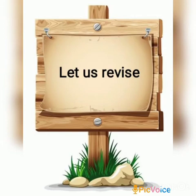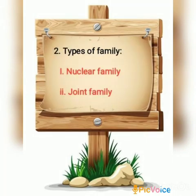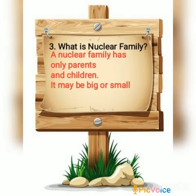Let us revise today's Chapter Number 3: My Family. First, what is a family? A family is a group of people related to each other. Second, the types of families — there are two types: Nuclear Family and Joint Family. A nuclear family has only one set of parents and children living together.